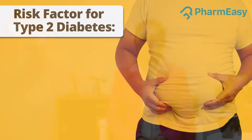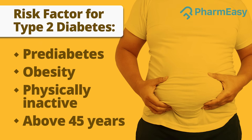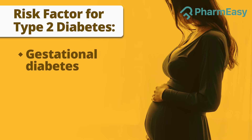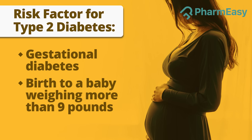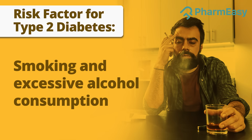You are at risk of developing type 2 diabetes if you have pre-diabetes, are overweight, are 45 years or older, are physically inactive, or have a parent or sibling with type 2 diabetes. Additional risk factors include having had gestational diabetes or given birth to a baby who weighed more than 9 pounds, having PCOS, or a habit of smoking and excessive alcohol consumption.